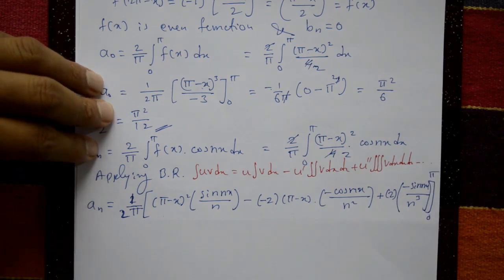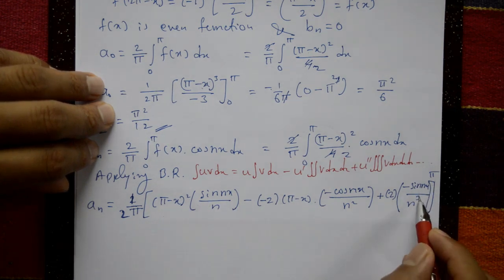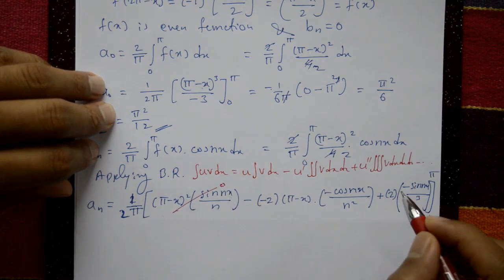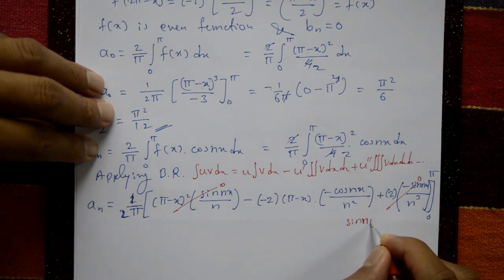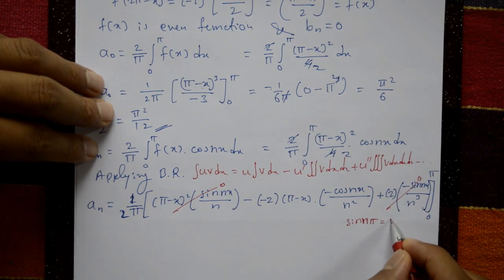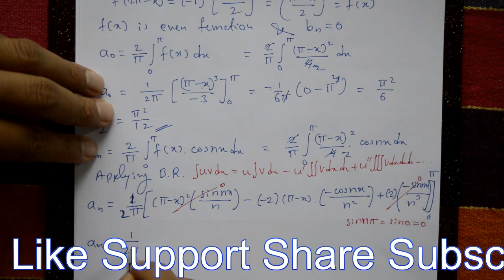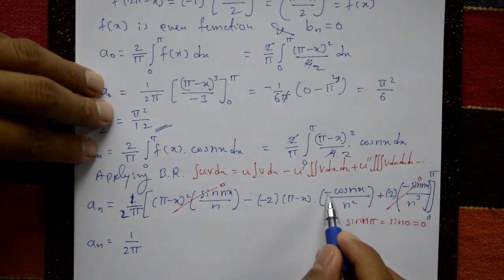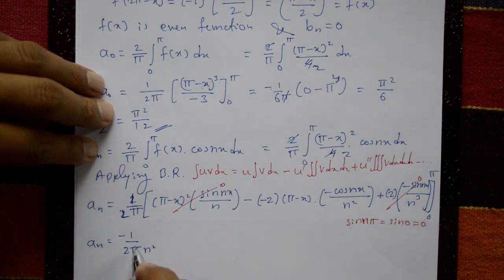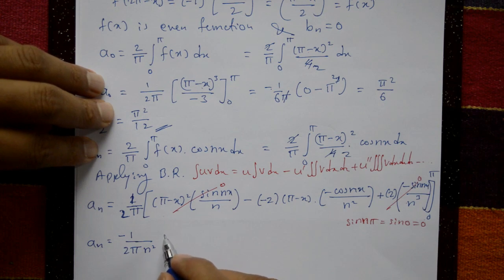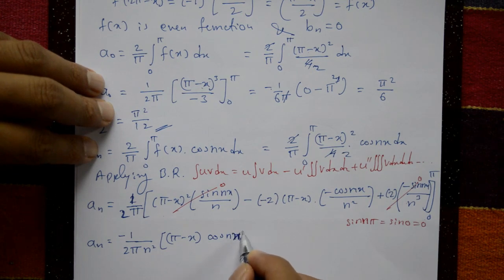The surviving term is the middle one: 1 by 2π times (minus)(minus 2) by n² times [(π minus x) cos(nx)] from 0 to π. At upper limit x = π: (π minus π) cos(nπ) = 0. At lower limit x = 0: π cos(0) = π times 1 = π. After simplification, the π cancels and we get aₙ equals 1 by n².